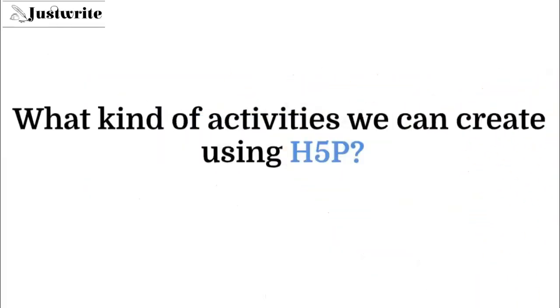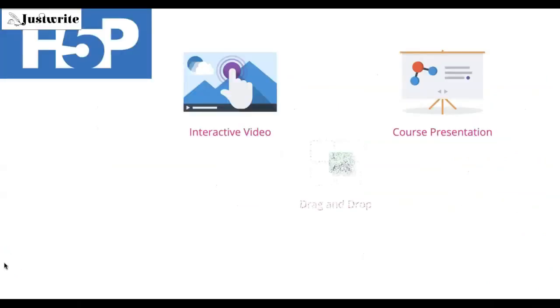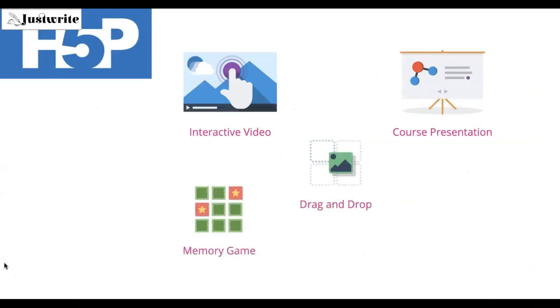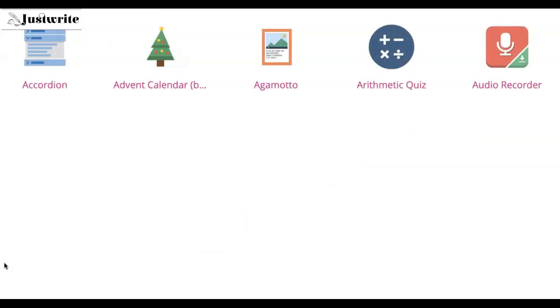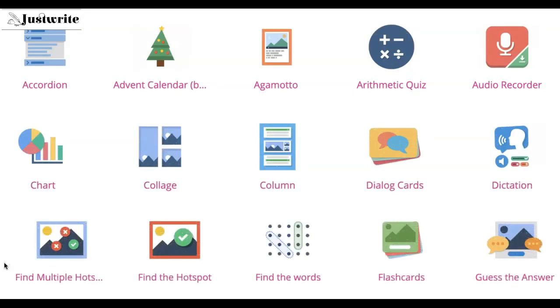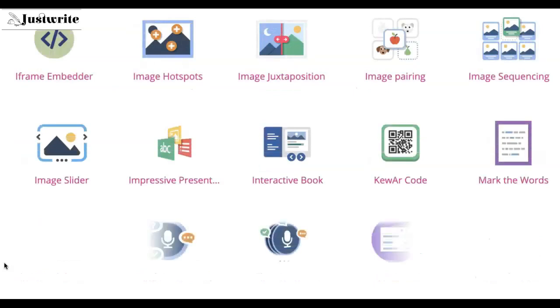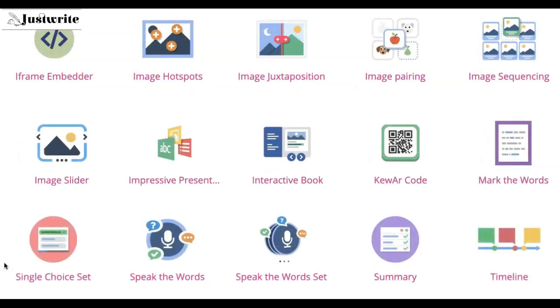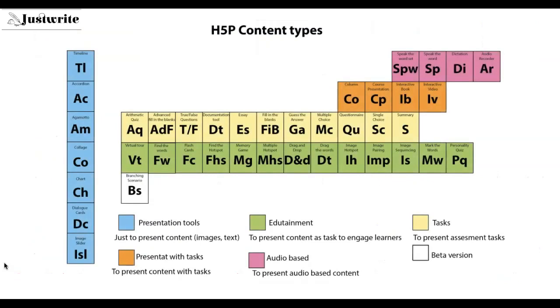What kind of activities can we create using H5P? The list is huge — from interactive videos to course presentations, various gaming activities like memory games, drag and drops, various quizzes like multiple choice or single choice, image sliders, and content arranged in various column types. Inside a presentation, you can even add interactivities like hotspots. There are more than 30 varieties of H5P content types you can create, and in the next page the content types are presented in a periodic table.